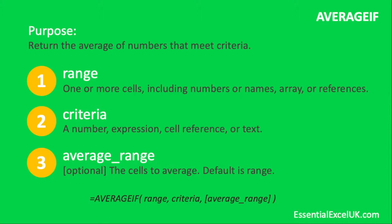We've got the full AVERAGEIF formula at the bottom of the slide — you can see the range, the criteria, and the average range, with the average range surrounded by square brackets indicating it's an optional entry. And as you can see in the top right-hand corner, we're referring to AVERAGEIF.